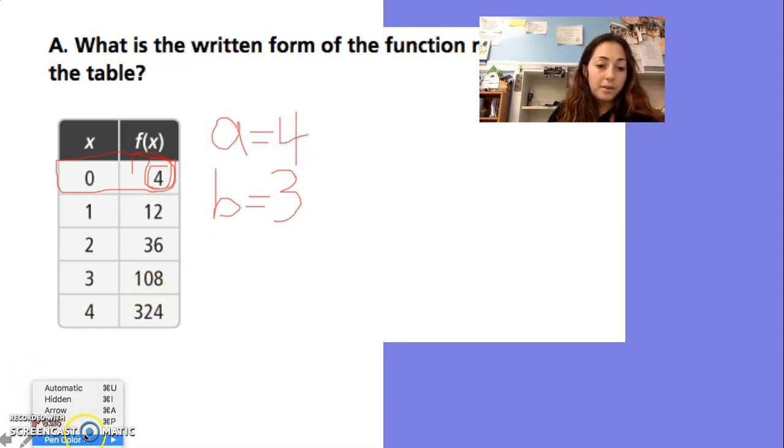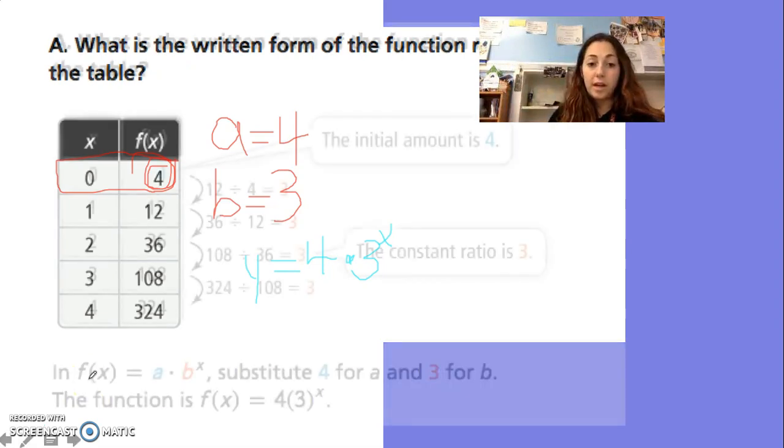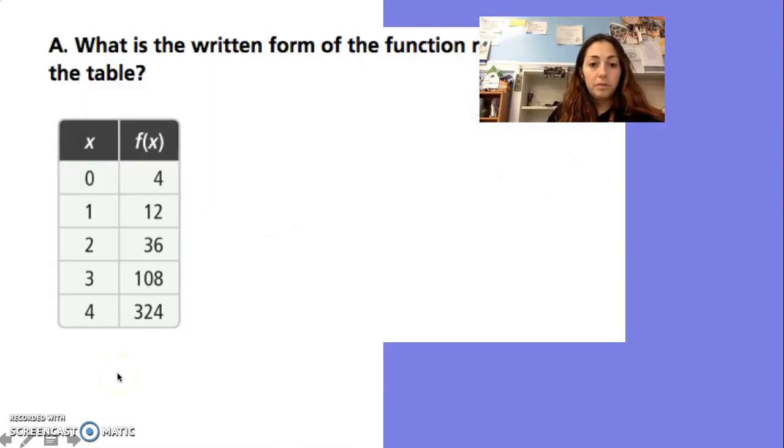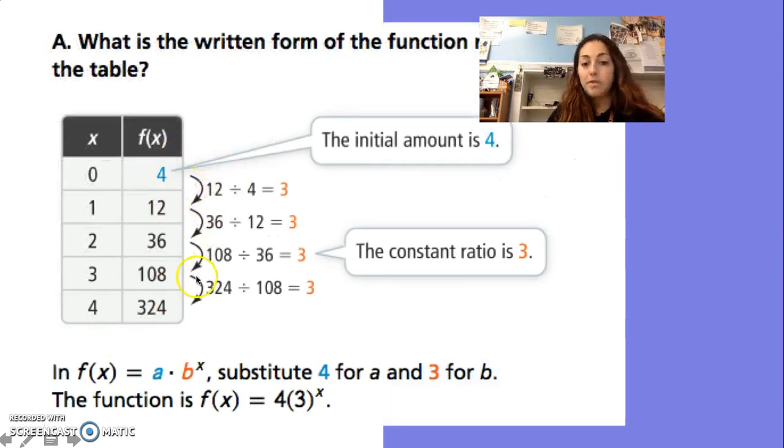So your equation is f(x) equals 4 times 3 to the x power. They're saying okay, we're dividing, dividing, and we get times 3. Our initial amount is 4, constant ratio is 3, and then they gave you the function f(x) equals 4 times 3 to the x. Notice the b is in parentheses a lot of times, especially if it's a fraction or if it's a decimal.